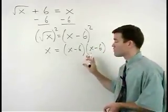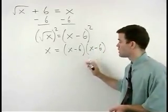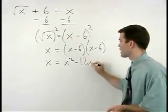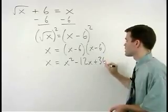And foiling the right side, we have x equals x squared minus 12x plus 36.